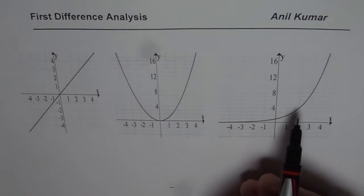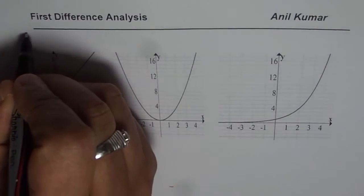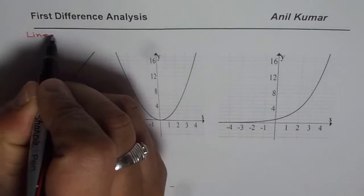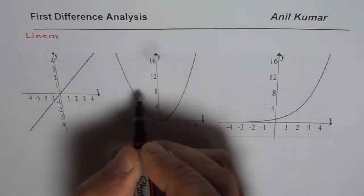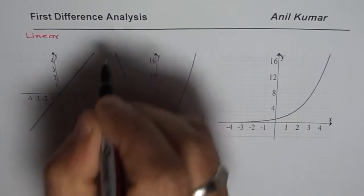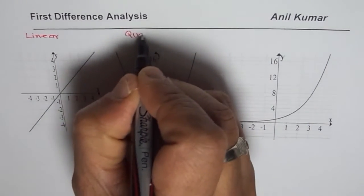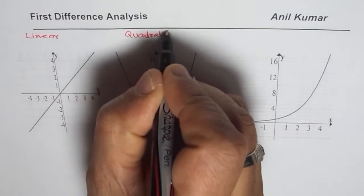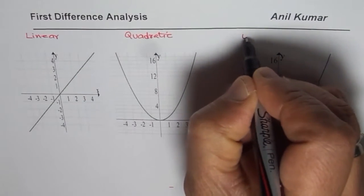We have three different graphs here. The first one is of a linear function. So let me write down this as linear. Now we know this represents, parabola is represented by quadratic. So let me write this as quadratic. And here we have exponential.